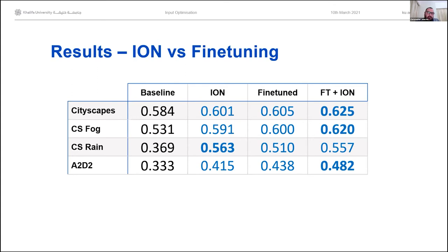The most important part of the table is the comparison between the ION and fine-tuned columns. Because in the ION column, the segmentation model has never seen three of these datasets, yet with our pre-processing it achieves results almost as good as a model that has seen those datasets. In the case of rain, it actually performs better. As an additional experiment, we trained another ION using this fine-tuned model as the target — a segmentation model that has seen all four datasets — and that gives even stronger performance than either approach in isolation.